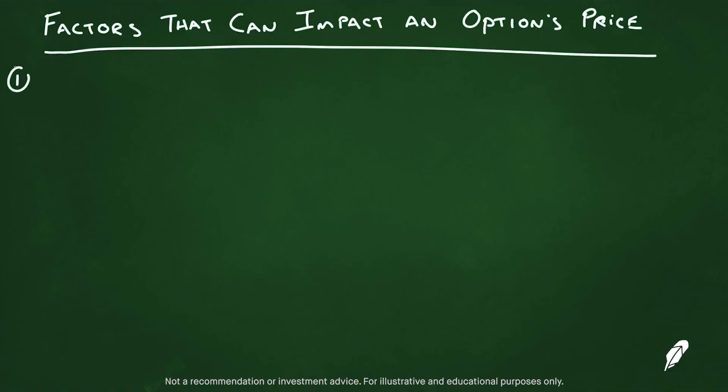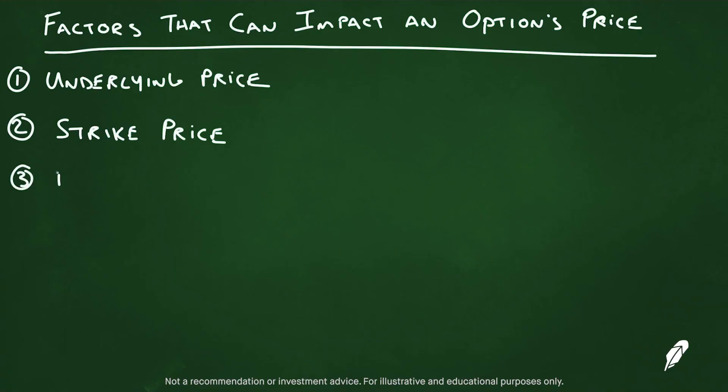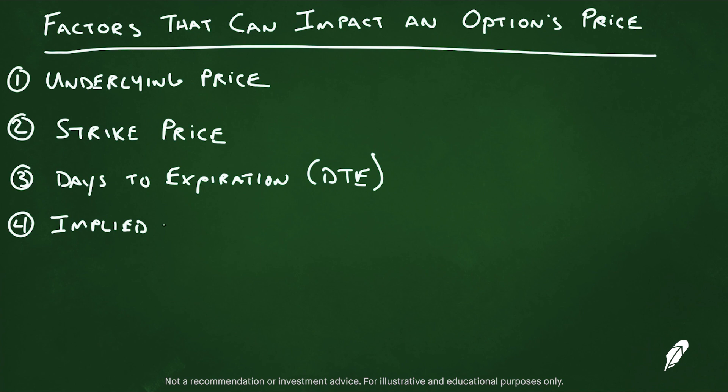Let's break down the factors that can impact an option's price, or what we call a premium. Number one: the underlying price — the price of the shares of stock associated with the option. Number two: the option's strike price, and the relationship of where those shares are trading compared to the strike price. Number three: days to expiration, or DTE — every option has an expiration date, and how many days until expiration impacts the value. Number four: implied volatility, sometimes referred to as IV.